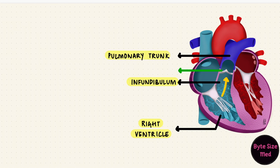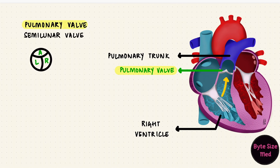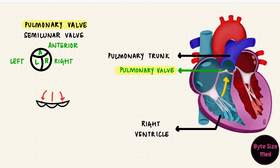Again, this is guarded by a valve — the pulmonary valve. The pulmonary valve is a semilunar valve and it has three semilunar cusps: right, left, and anterior. Now unlike the atrioventricular valve, the semilunar valves are not attached to chordae tendineae or papillary muscles. So how do they stay closed? After ventricular contraction, the pressure change results in blood recoiling and filling up the pockets that the cusps form with the wall. These are the pulmonary sinuses. This keeps the valve shut, and blood doesn't flow back into the right ventricle.